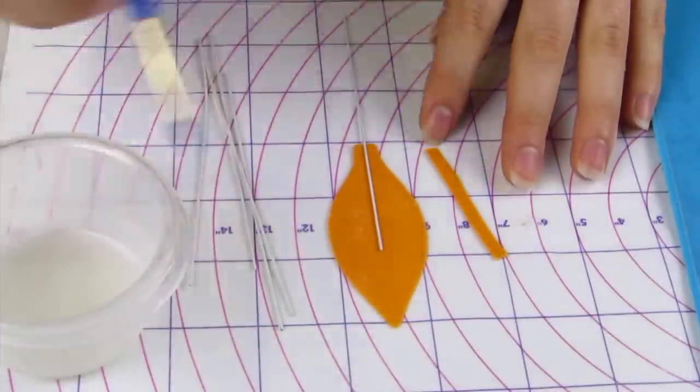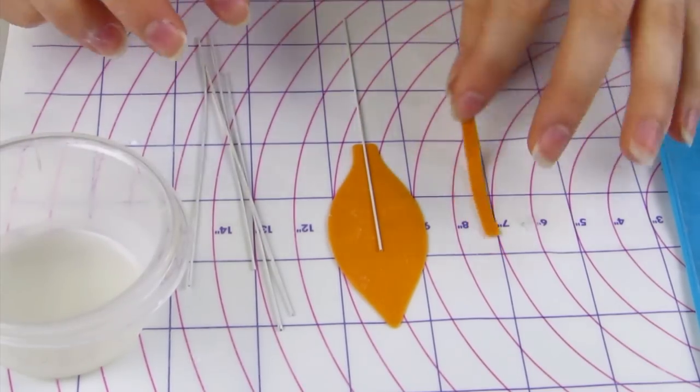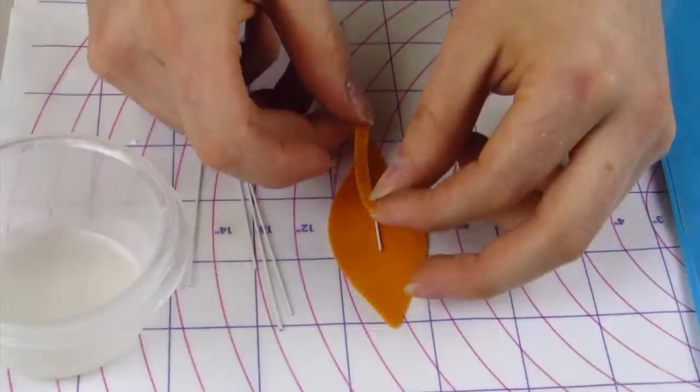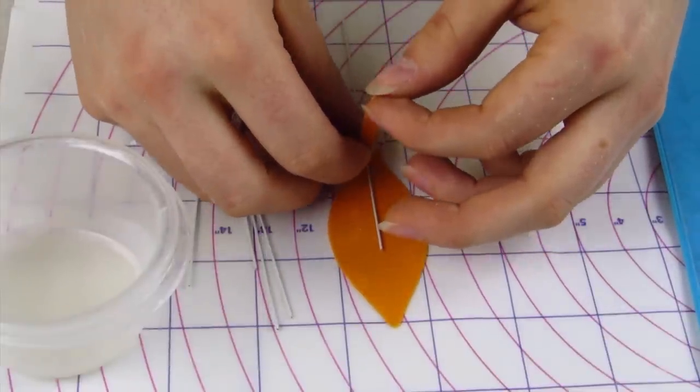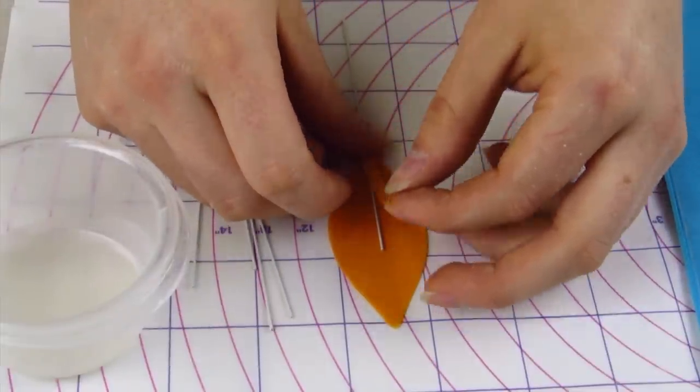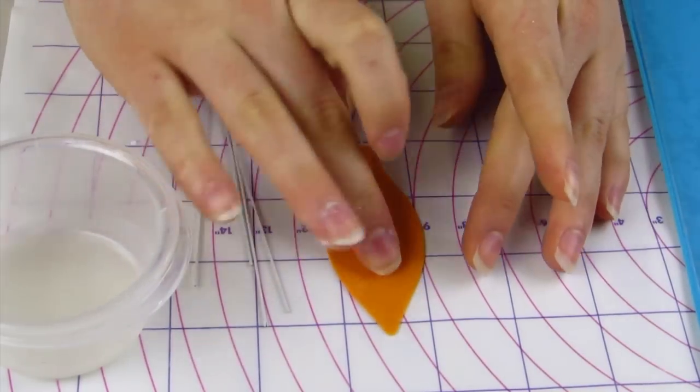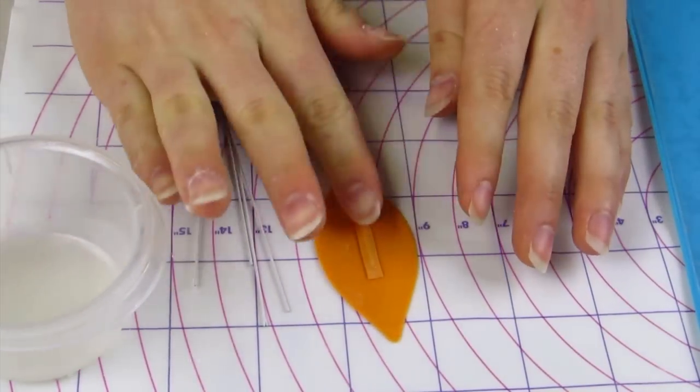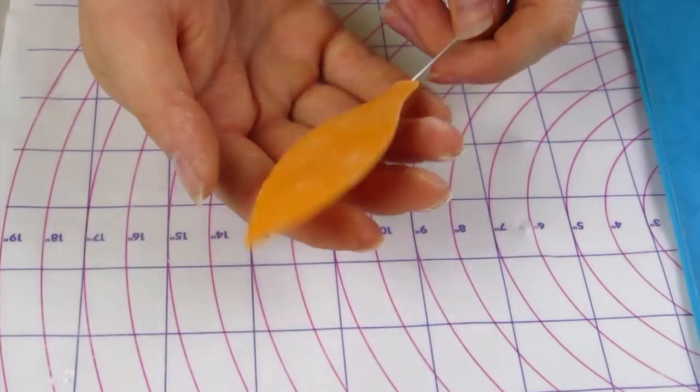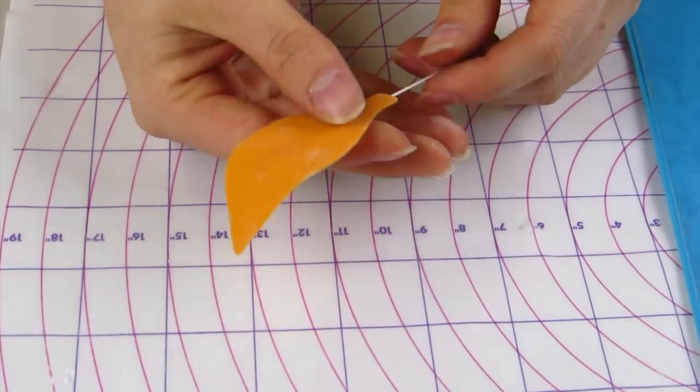And to assemble it I've just cut this little strip of orange gum paste. And I'm going to put down a 24 gauge wire onto my petal and then cover it with this strip of gum paste. And then push that in place with my fingers. And you're going to assemble that using gum glue as well.